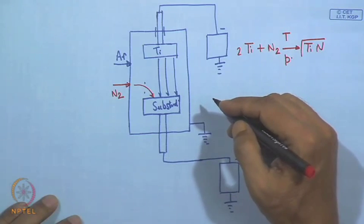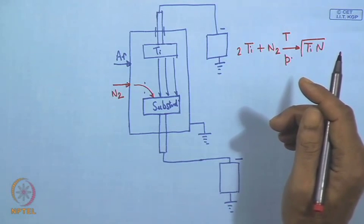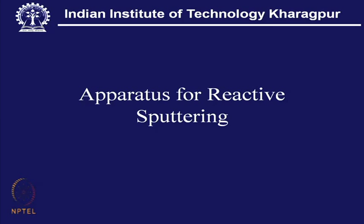With the right combination of process variables, TiN formation takes place right on the substrate surface, and a titanium nitride coating architecture builds up. This is exactly what we mean by reactive sputtering. It can be applied to any nitride — for example, hafnium nitride or zirconium nitride, since these Group 4B elements have the best chemical stability and are extremely useful for functional coating requirements.